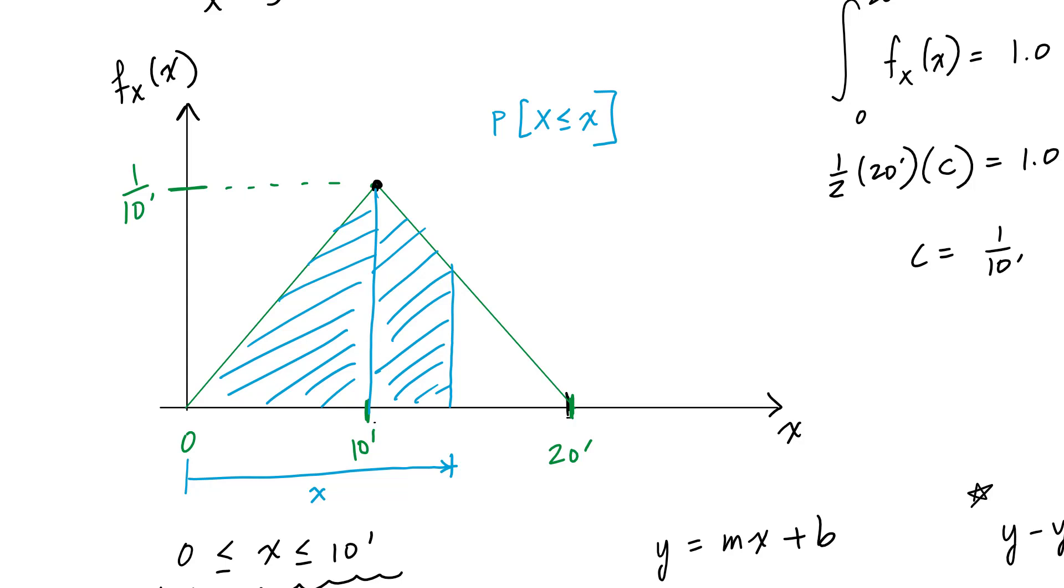So here, I can already tell from looking at this, this was a symmetric triangle, right? So that means this area right here, my CDF value is going to be this area, which is half or 0.5 plus whatever this number is right here, whatever that area is here.